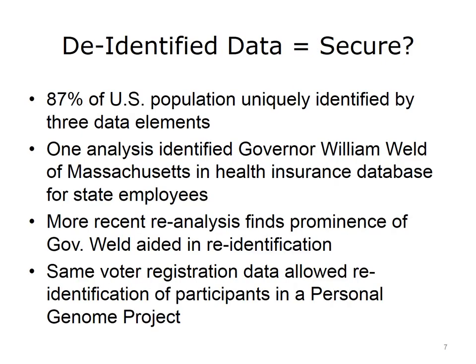So if health data has been de-identified, that means the identities of the individuals whose data it is are secure, right? Not necessarily. Research done by Sweeney and colleagues found, for example, that 87% of the U.S. population can be uniquely identified by using as few as three data elements: the five-digit zip code of where they live, their gender, and their date of birth.